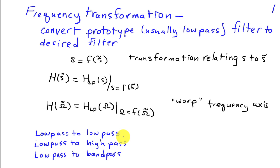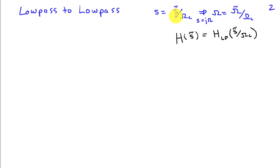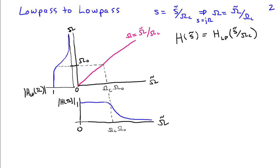We are going to look at low pass to low pass, which amounts to changing the cutoff frequency, low pass to high pass, and low pass to band pass transformations. A low pass to low pass transformation takes the form s equals s tilde divided by omega c. We can obtain the frequency response by replacing s with j omega, and we see that this transformation relates the frequency axis according to omega equals omega tilde divided by omega c. We can get a better idea of how this works by graphically looking at the frequency transformation. Shown here is the function omega of omega tilde — our frequency transformation, omega equals omega tilde divided by omega c.